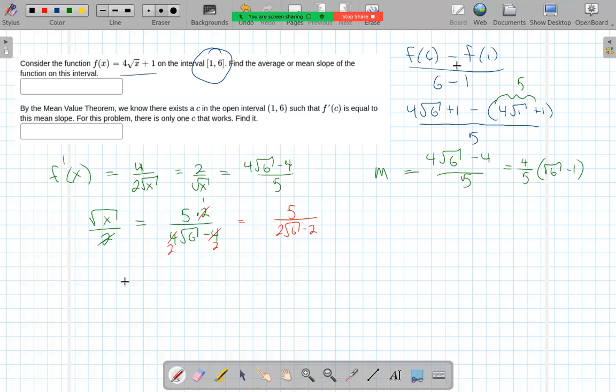Squaring both sides, we get x is equal to the square of that, which doesn't really simplify too much. I don't see the point in rationalizing the denominator here.